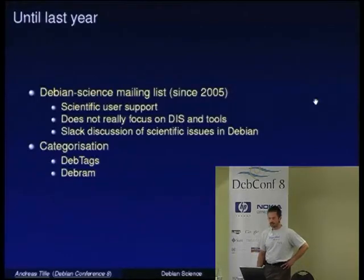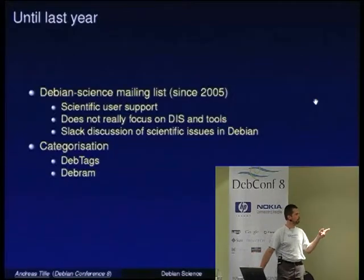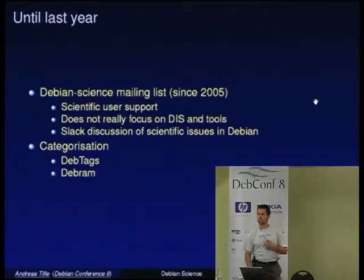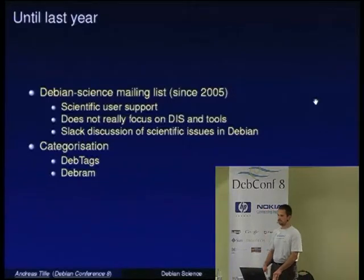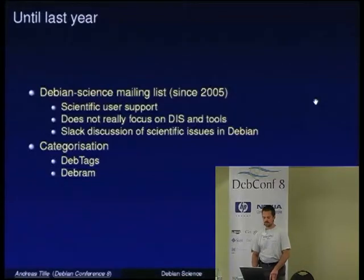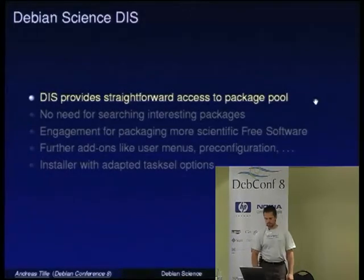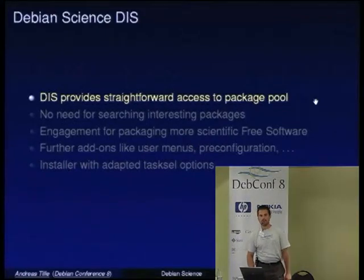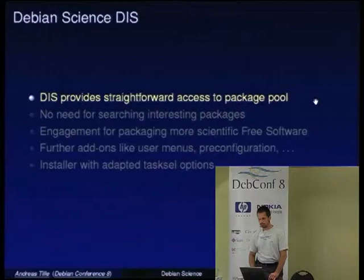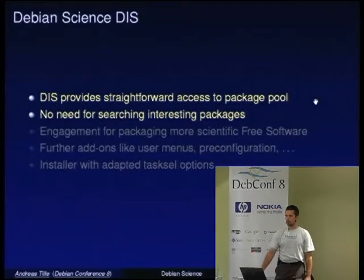Then we had Debram, which I only detected when preparing my first talk about Debian Science — I was not aware such a tool existed. Debram is an effort to classify packages, but I think debtags is much more powerful, and my estimation is that Debram will die sooner or later. So, what about the Debian Science dish? A dish provides straightforward access to the package pool using techniques I explained in my earlier talk about the formerly so-called CDDs.